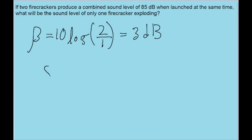So in other words, if the combined sound is 85 decibels, then only one firecracker going off, which will be half as intense, is going to be that minus 3 decibels. The sound level of only one firecracker going off is going to be 82 decibels.